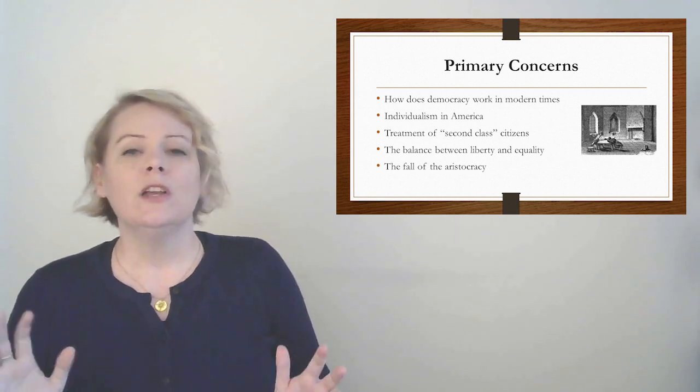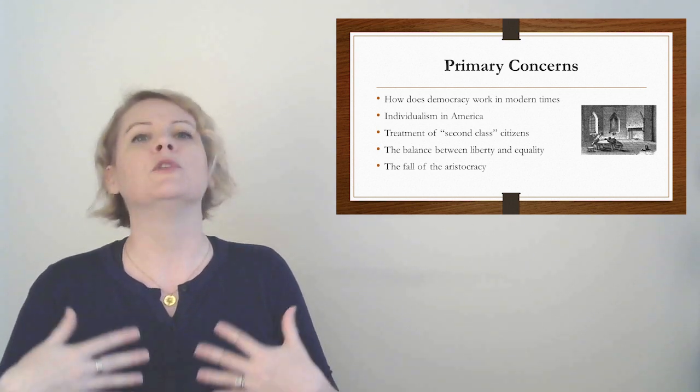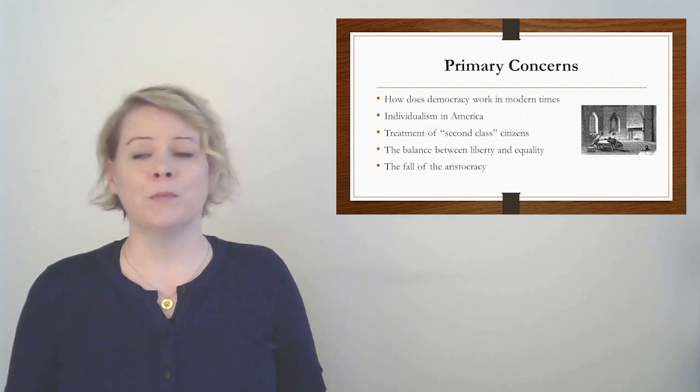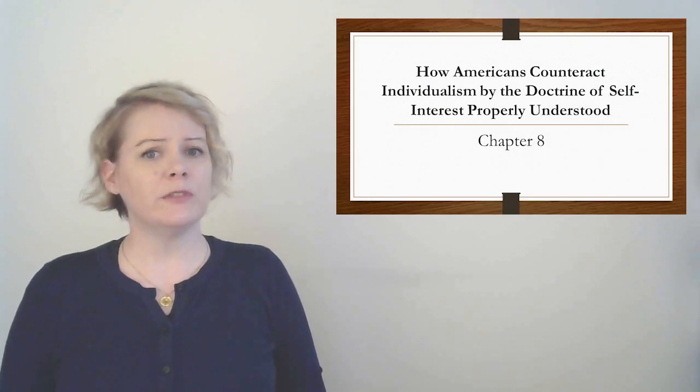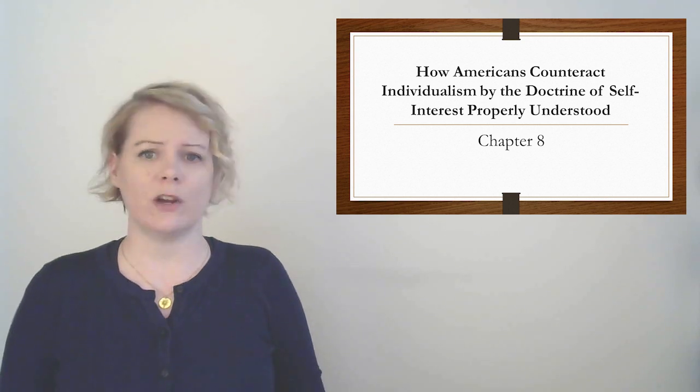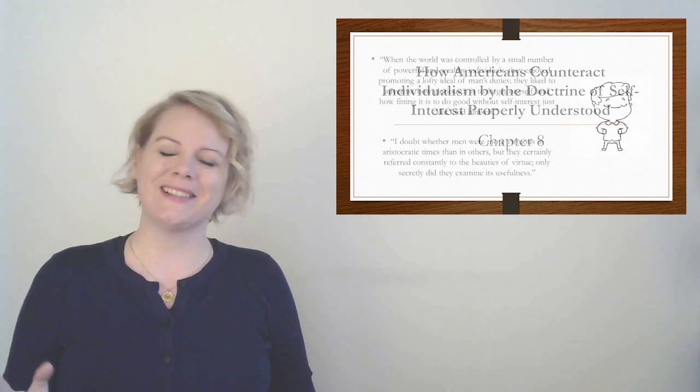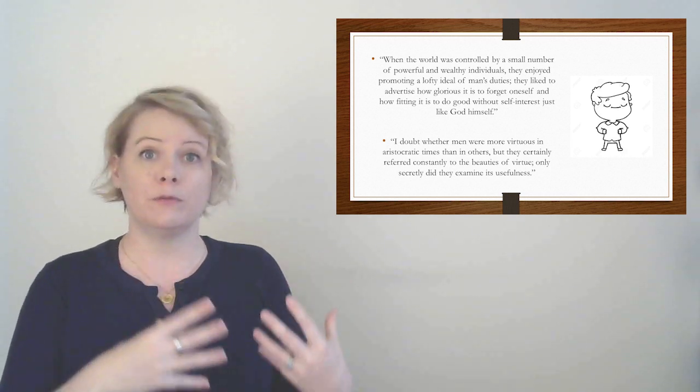So in a lot of ways, he was seeing the future. But his main concerns, as he was working on this book, were essentially how democracy was impacting everything else. So he was looking at stuff about democracy in modern times, like, does it still work in the age of industrialization? Stuff about individualism, because Americans are, of course, obsessed. The treatment of second-class citizens, both workers and, of course, slaves as well. And also balancing liberty and equality, and what happens when the aristocracy falls, and everybody's kind of even. So this book is a big old chunk of a book. He wrote down everything. So we are only going to read the parts today that are about jobs, and about democracy, and how that influences jobs, because that's what our class is about.